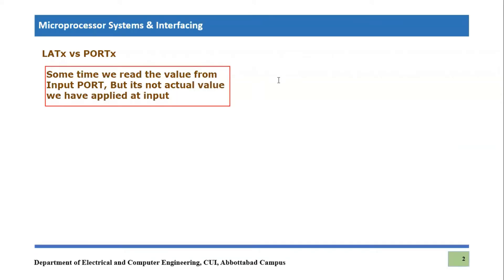Before we go and discuss our topic, we must understand why this topic is important to any programmer who is going to use this microcontroller in their projects. There is an important issue I have written for you over here in this box: sometimes we read the value from an input port, but it's not the actual value that we have applied at the input. We use certain input values to the controller, but when we try to read from the controller side using programming, we see that these values are not equal. This is an important issue one has to deal with.